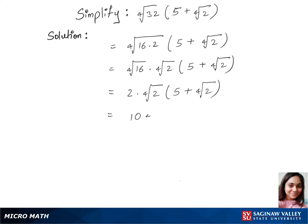In our next step, we multiply out: 2 times 4th root of 2 times 5 gives 10 times 4th root of 2, plus 2 times 4th root of 2 squared, which equals 4. This is our final answer.